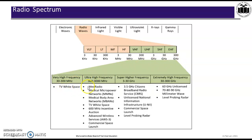The 30 to 300 megahertz frequency is very high frequency (VHF), used in TV white space. Ultra high frequency (UHF), 300 to 3000 megahertz, is used in medical micro power networks, TV white space, advanced wireless services, and commercial space launch. Super high frequency, 3 to 30 gigahertz, is used in CBRS — Citizens Broadband Radio Service — and unlicensed national information infrastructure. The 30 to 300 gigahertz extremely high frequency (EHF) is used in millimeter wave technology, which supports 5G mobile networks and radar.